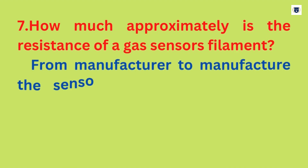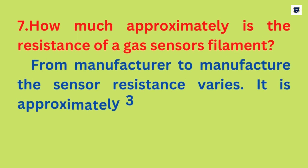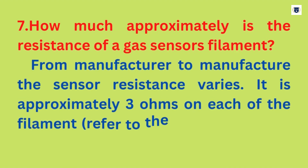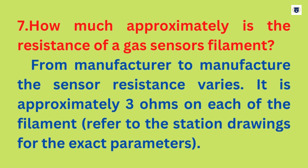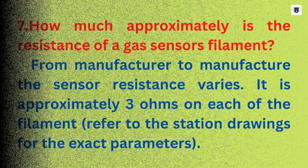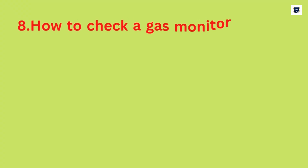How much is approximately the resistance of a gas sensor's filament? From manufacturer to manufacturer the sensor resistance varies; it is approximately three ohms on each of the filaments. Refer to the station drawings for the exact parameters.